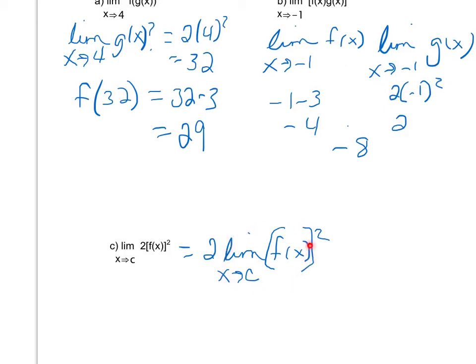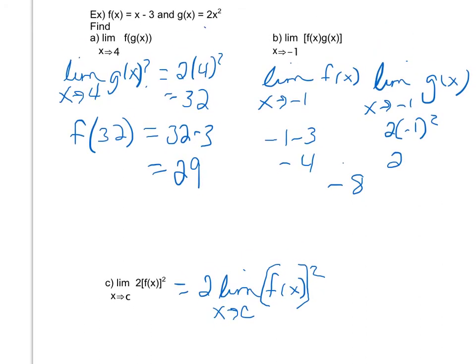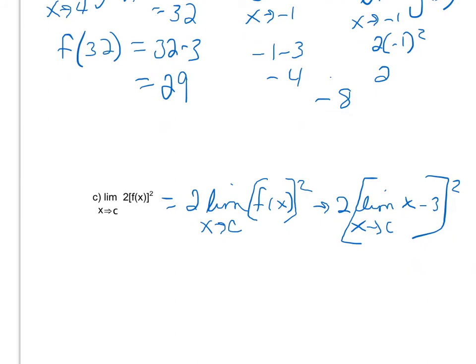So I don't have to worry about squaring my function. I'm going to scroll up here because I don't remember what f(x) was. f(x) was x - 3. So if I say can I find the limit as x approaches c for x - 3 and then after I find that limit I will square it, that's what that property on page 57 says I can do with a power or an exponent.